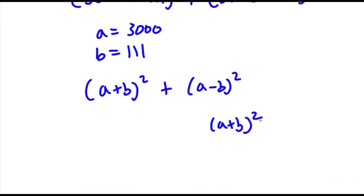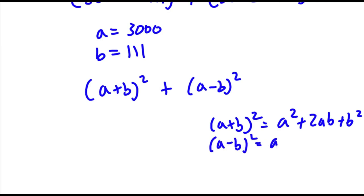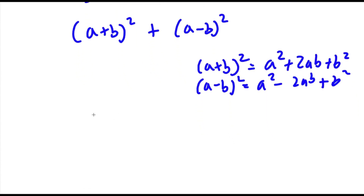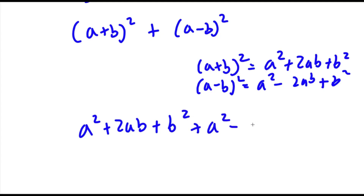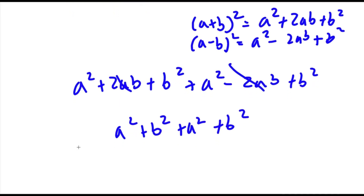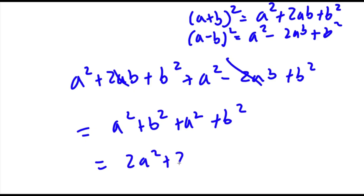Now (a plus b) squared is equal to a squared plus 2ab plus b squared. And (a minus b) squared is equal to a squared minus 2ab plus b squared. So now if I add these two together I get a squared plus 2ab plus b squared plus a squared minus 2ab plus b squared. The 2ab terms cancel out, and I'm left with a squared plus b squared plus a squared plus b squared, which is equal to 2a squared plus 2b squared.